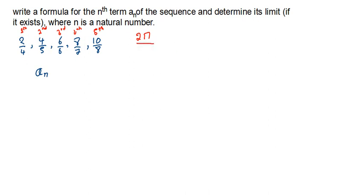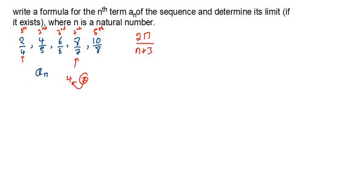What about the denominator? From the denominator, the first term is 4 instead of being 1, the second term is 5 instead of being 2, and the third term is 6 instead of being 3. So what we can see is that each denominator term is 3 greater than its position. For example, the fourth term was supposed to be 4, but it happens to be 7 — which is 3 greater. So we can just say the denominator is n plus 3.